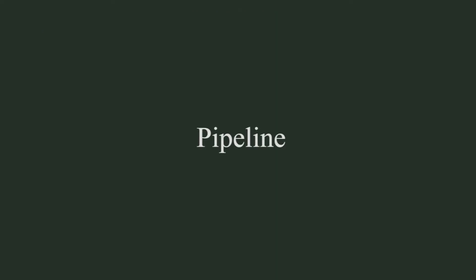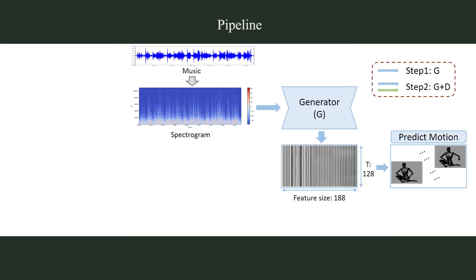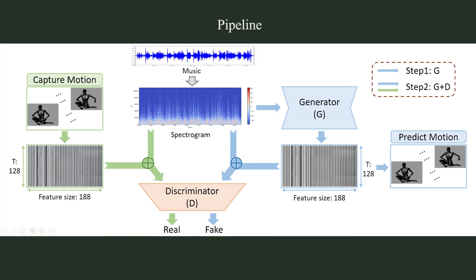Let's talk about the proposed method. In the proposed method, the input Guqin audio is first translated to a spectrogram. Then a generator is built to transform the Guqin audio spectrogram to the animation trajectories of the upper body joints. Finally, a multi-scale patch discriminator is also designed to supervise the training process of the generator.